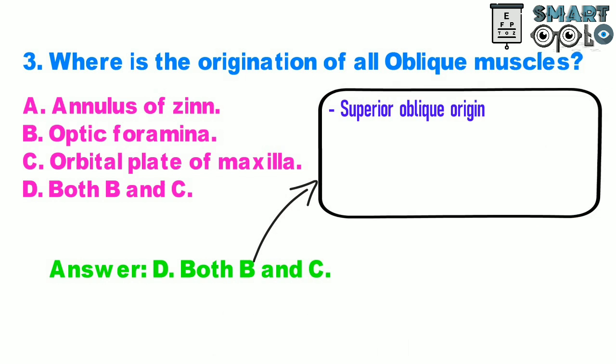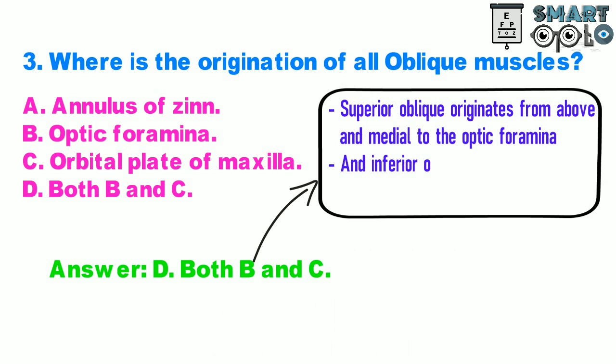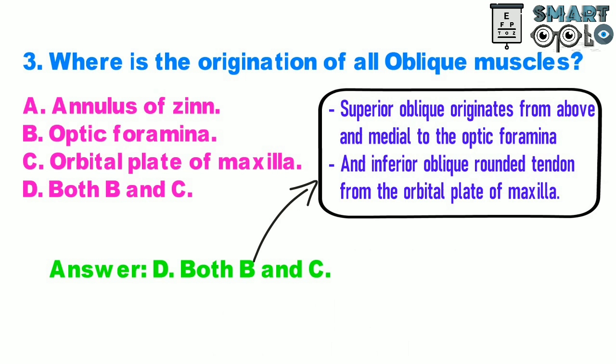Superior oblique originates from above and medial to the optic foramen, and the inferior oblique has a rounded tendon originating from the orbital plate of maxilla.